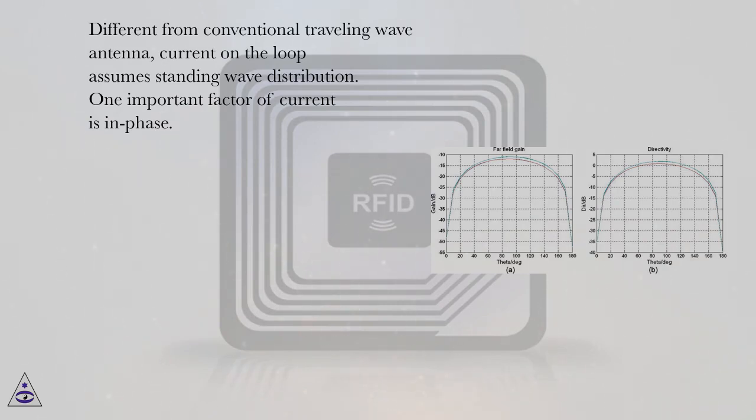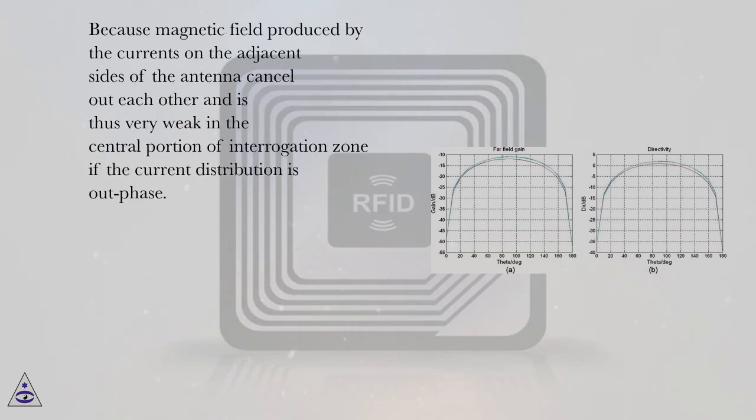One important factor of current is in-phase. Because magnetic field produced by the currents on the adjacent sides of the antenna cancel out each other and is thus very weak in the central portion of interrogation zone if the current distribution is out of phase.